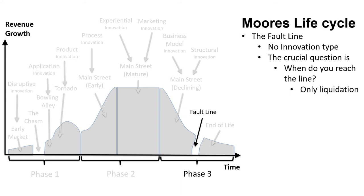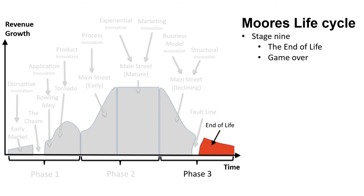Stage 8 – The Fault Line: There is no aligning innovation type. The crucial question is when you reach the fault line, because after it there is no innovation, only liquidation. Stage 9 – The End of Life: It is only a question of when the product will no longer be produced. There are no good reasons to invest in the product or service anymore. It is game over.